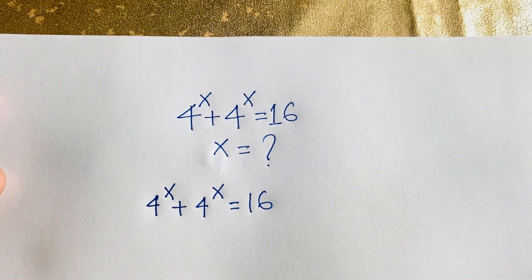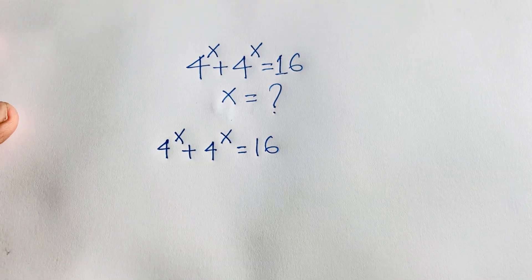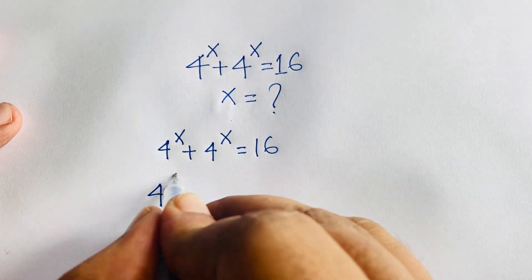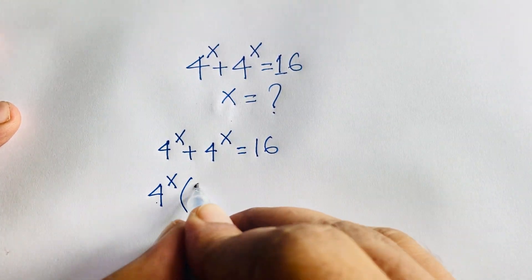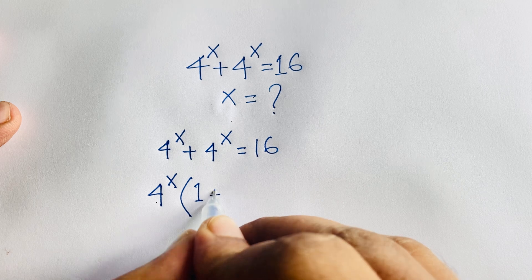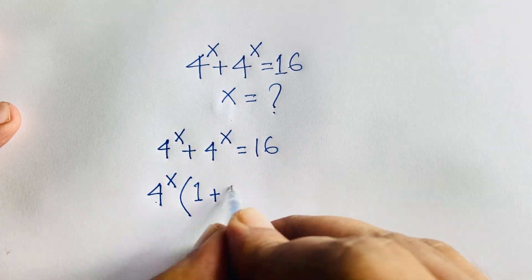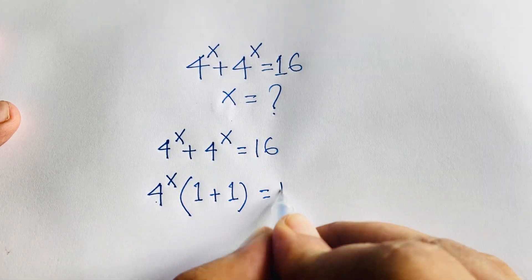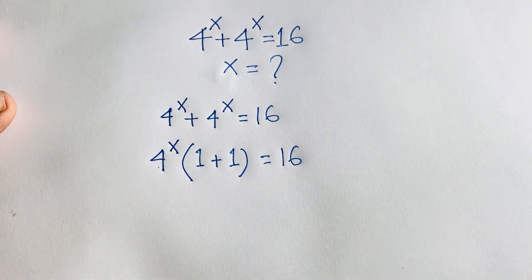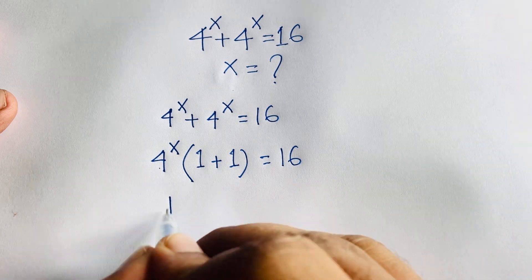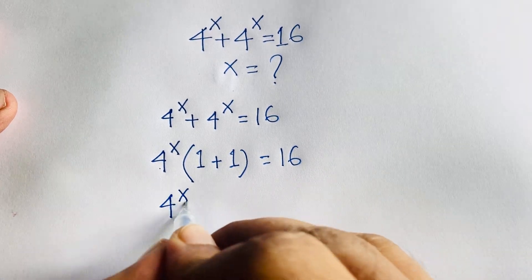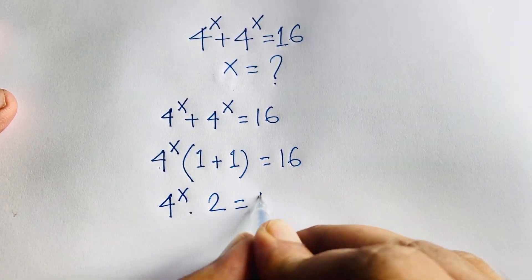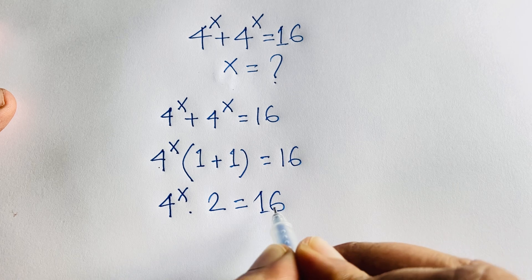Here, 4 to the power x is common. So 4 to the power x times — dividing each term — it will be 1 plus 1, which is equal to 16. Then we find out 4 to the power x times 2 (since 1 plus 1 equals 2) is equal to 16.